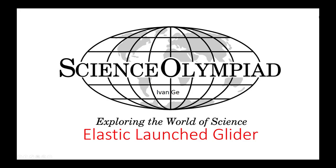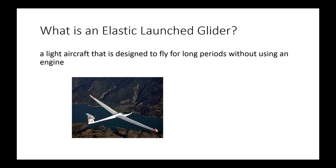Hello guys, my name is Ivan and today we are going to be talking about the elastic launched glider for Science Olympia. So what is a glider? A glider is a light aircraft that is designed to fly for long periods without using an engine.